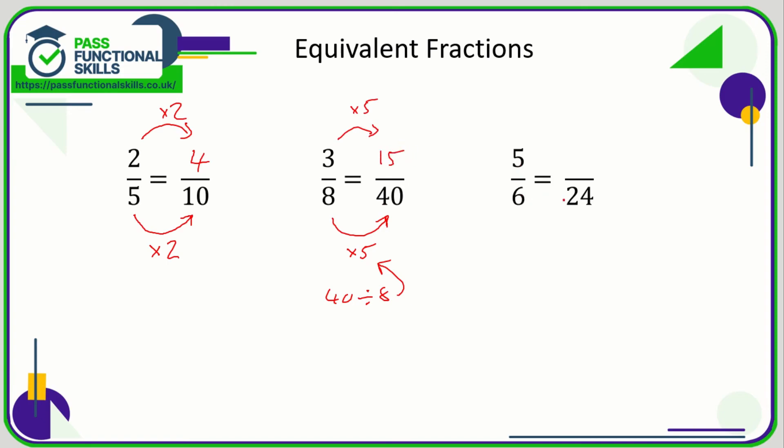5/6 is something out of 24. 6 times what is 24? And if you don't know and you're able to use a calculator, then just do 24 divided by 6 which is 4. Or just do your 6 times table: 6, 12, 18, 24, so that's 1, 2, 3, 4, so times by 4. So if we're multiplying the bottom by 4, for the equivalent fraction we need to multiply the top by 4 as well, and 4 times 5 is 20. So 5/6 is equivalent to 20/24.